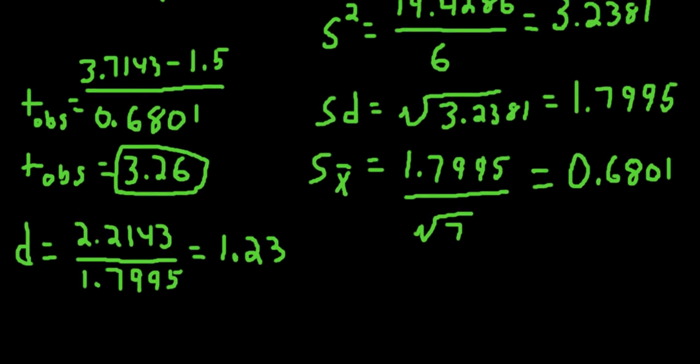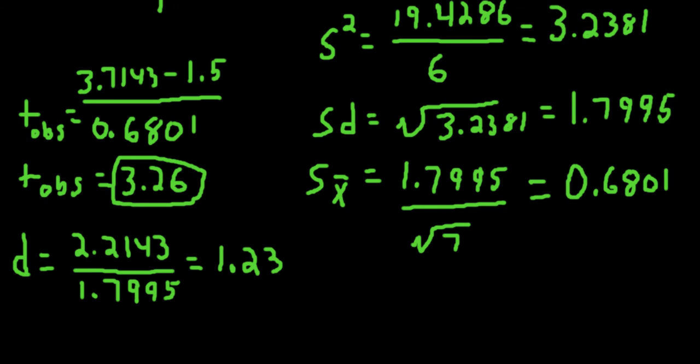So that's how you, by hand, can calculate t observed and make decisions regarding statistical significance and evaluate a measure of effect size.